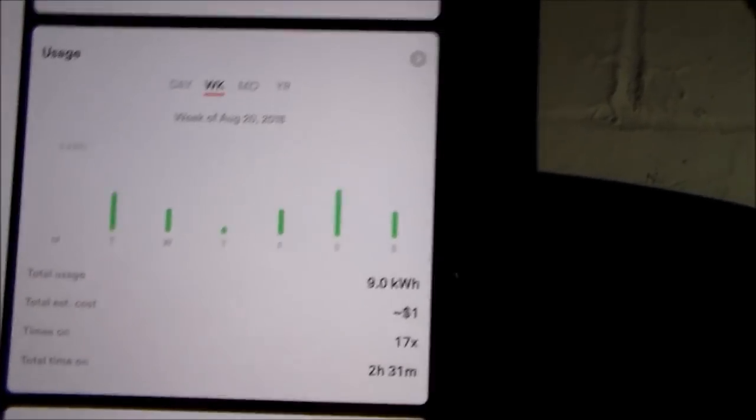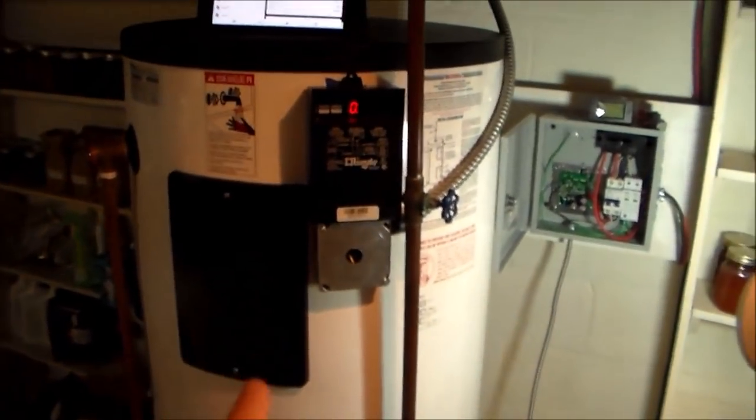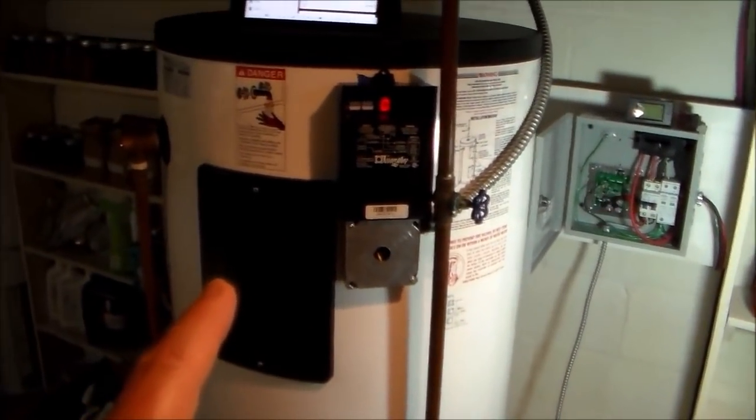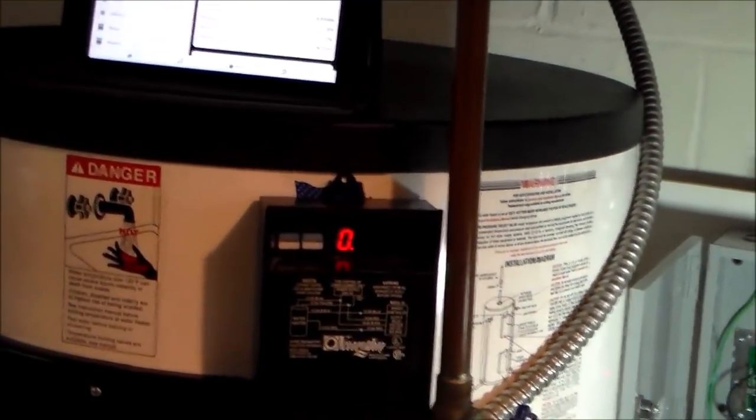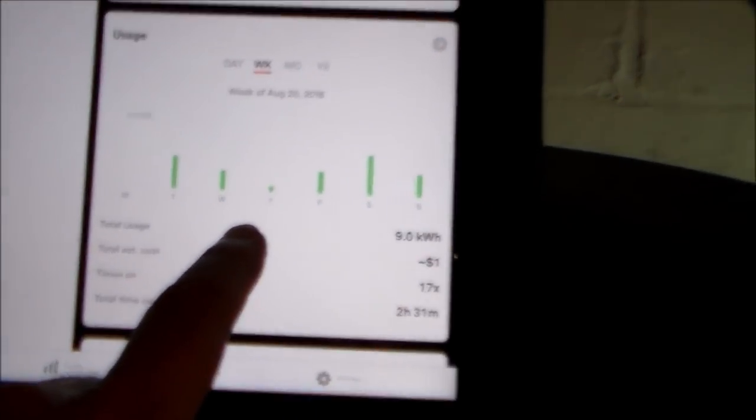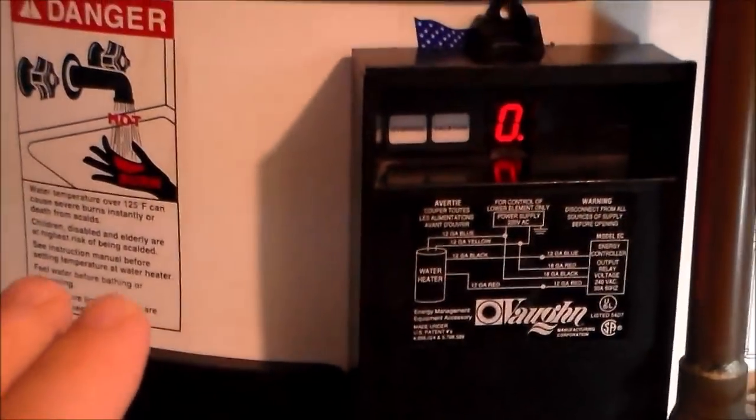Hopefully that gives everybody a good picture of what this might do for you. I do want to point out I have a huge tank—an 85-gallon hot water tank in my house. If you were to hook this up on a typical 40-gallon or 50-gallon tank instead of this big tank, I would guess that the upper element would not have to come on at all. This device would produce all of the electricity needed to keep one of those smaller tanks going.